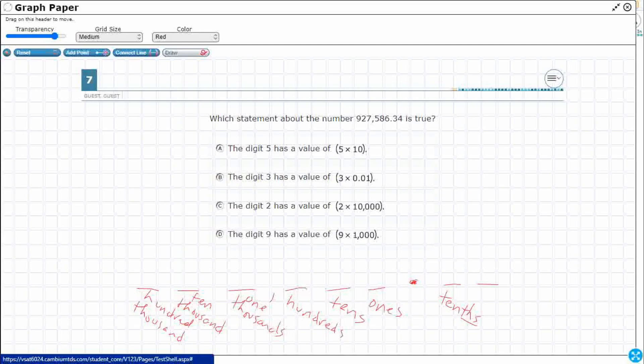So tens, tenths. Next is hundreds, hundredths. In fifth grade, you'll expand to a third digit after the decimal, and that's the thousandths, because the thousands is next.